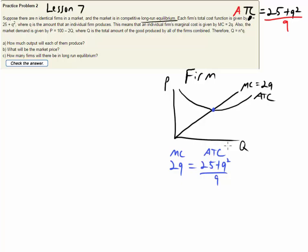Now this is just an equation. We can multiply both sides by Q and then we get 2Q squared equals 25 plus Q squared.